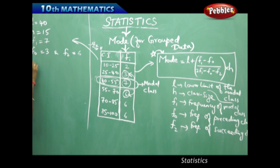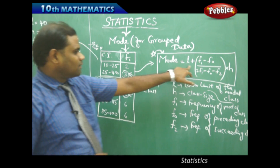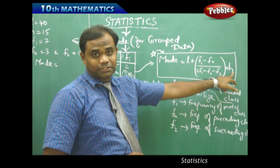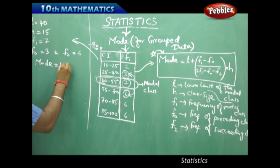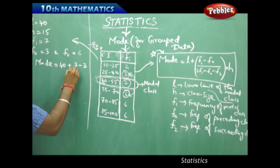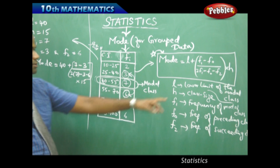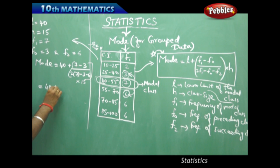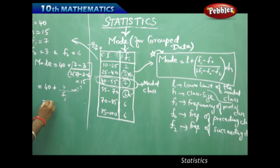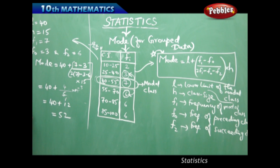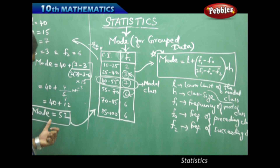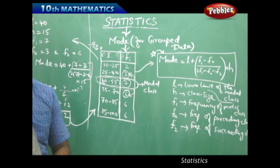Substituting into the formula: Mode = 40 + [(7 − 3) / (2×7 − 3 − 6)] × 15 = 40 + [4 / (14 − 9)] × 15 = 40 + [4/5] × 15 = 40 + 12 = 52. Therefore, the mode of the given grouped data is 52.